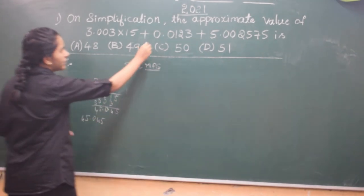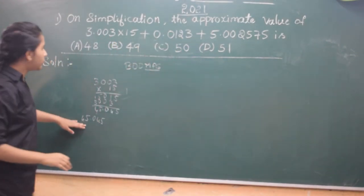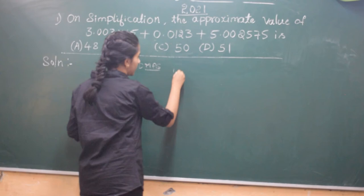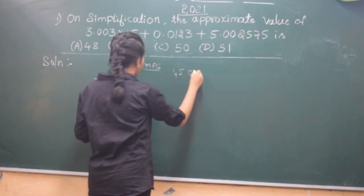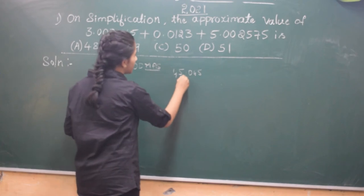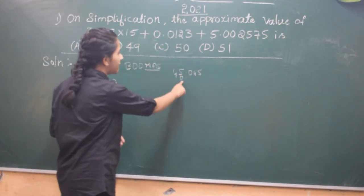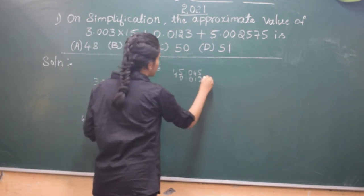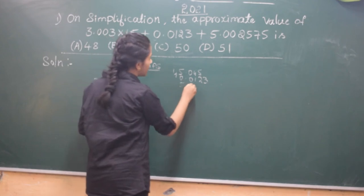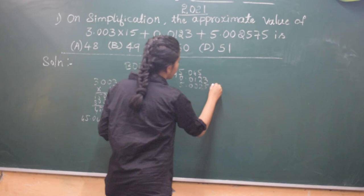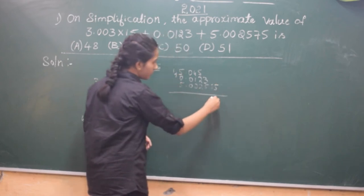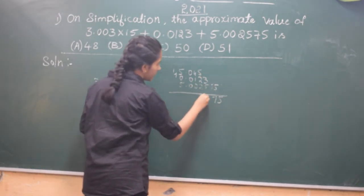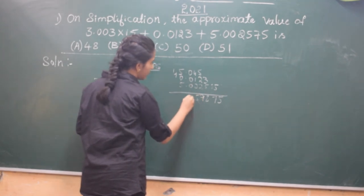Now we have addition here. If you can, then you can put all the 3 additions and do it together or you can do 2 at a time. But we will do all the additions together. 45.045 plus 0 point... Here you should see where the point is. It's very important to put all the points together. 0.0123, 5.002575... 0 point.